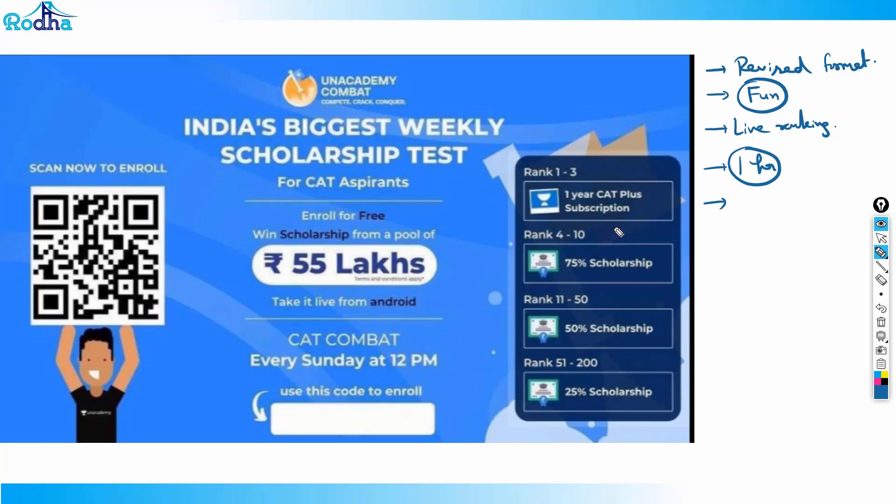For CAT you should give multiple sectional tests beforehand. This is one of your high-quality tests, absolutely free of cost. Earlier it wasn't that rewarding, but now they've introduced great rewards - rank 1, 2, 3 get one year subscription, around 20,000 or 75% scholarship or 50% - great prizes are on offer.